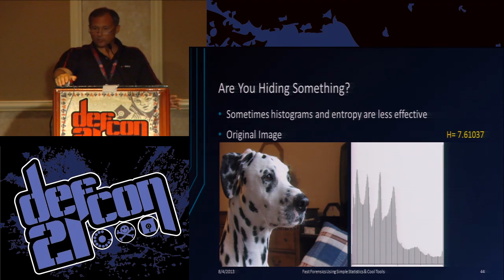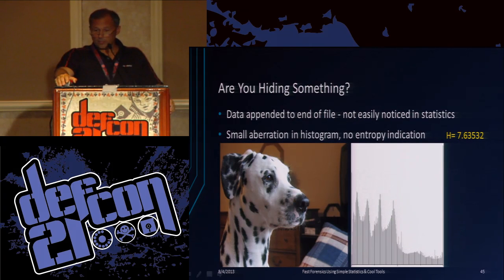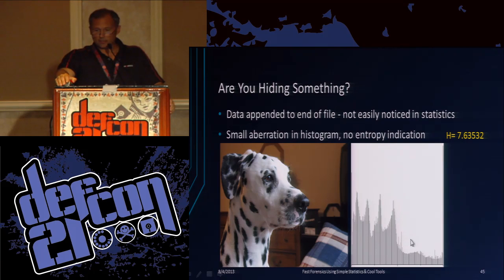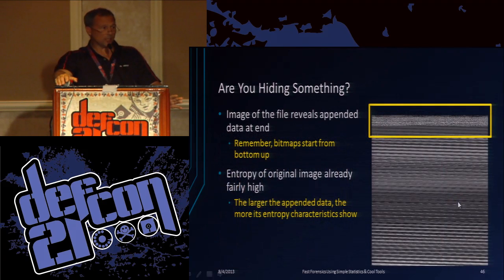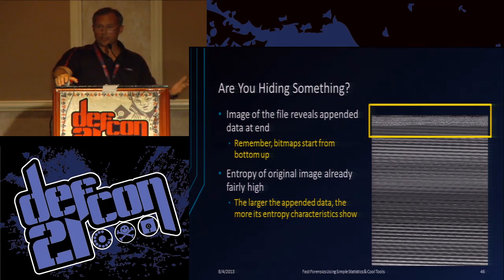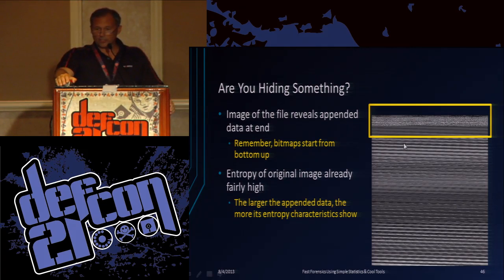Histograms and entropy aren't always effective. This is the full color bitmap. You see how it's fairly smooth. If we're hiding data appended to the end of the file, statistics don't really tell you a lot about it. However, if you look at the histogram, you can see something unusual — those spikes are unusual for a 24-bit bitmap. And some of that just comes from experience — I've done this on hundreds of bitmaps over the years. Here is the bitmap picture and you can see some data hiding at the end because it has a different characteristic there.